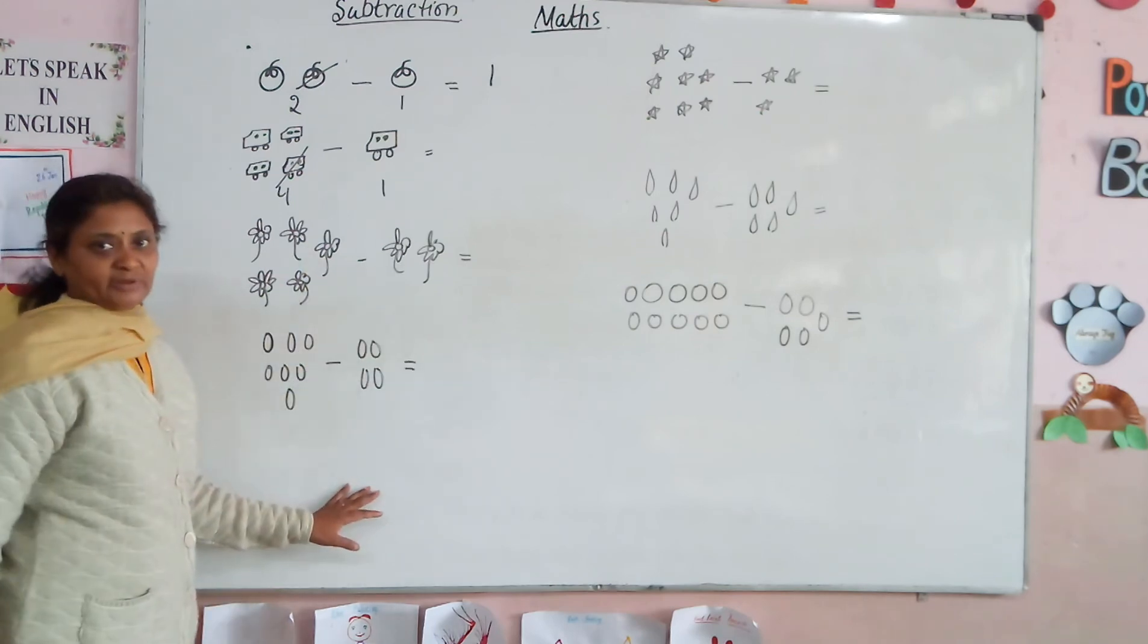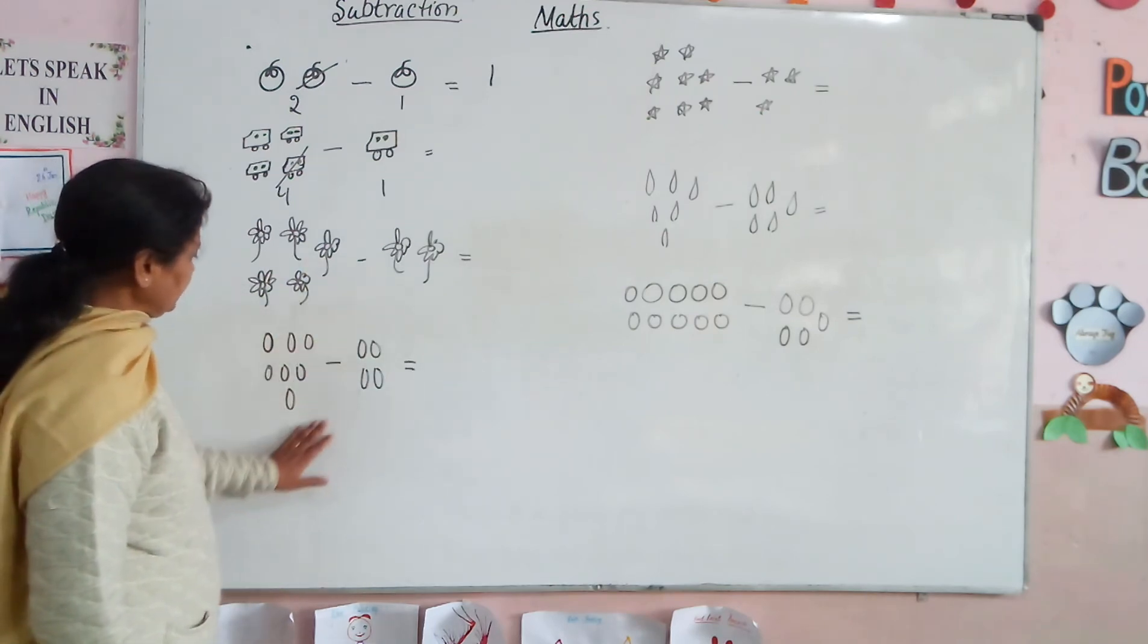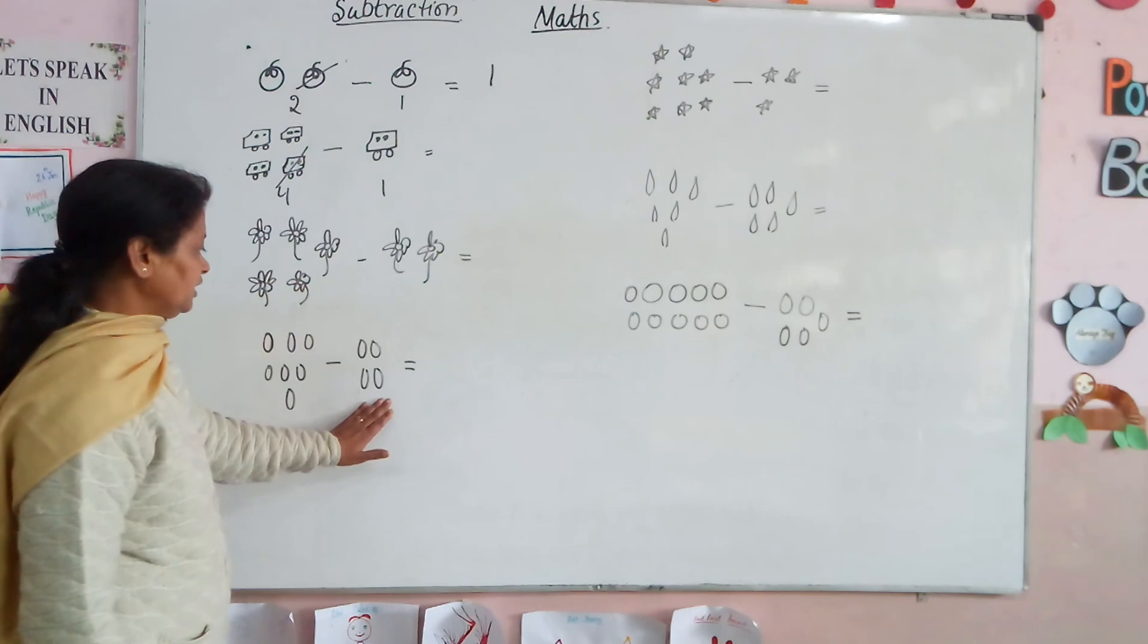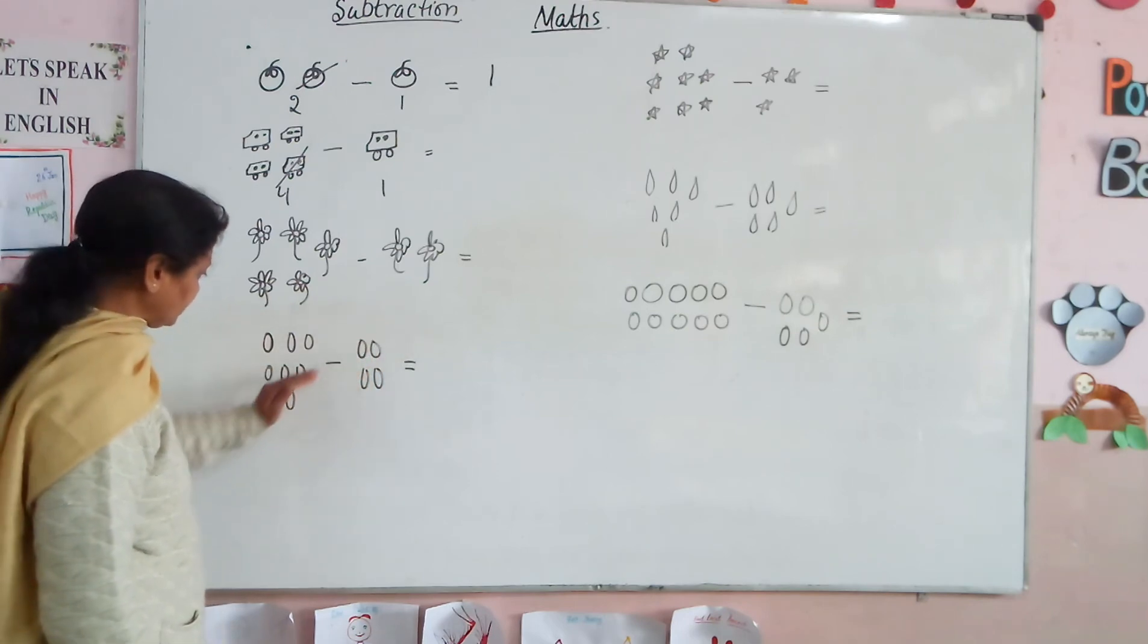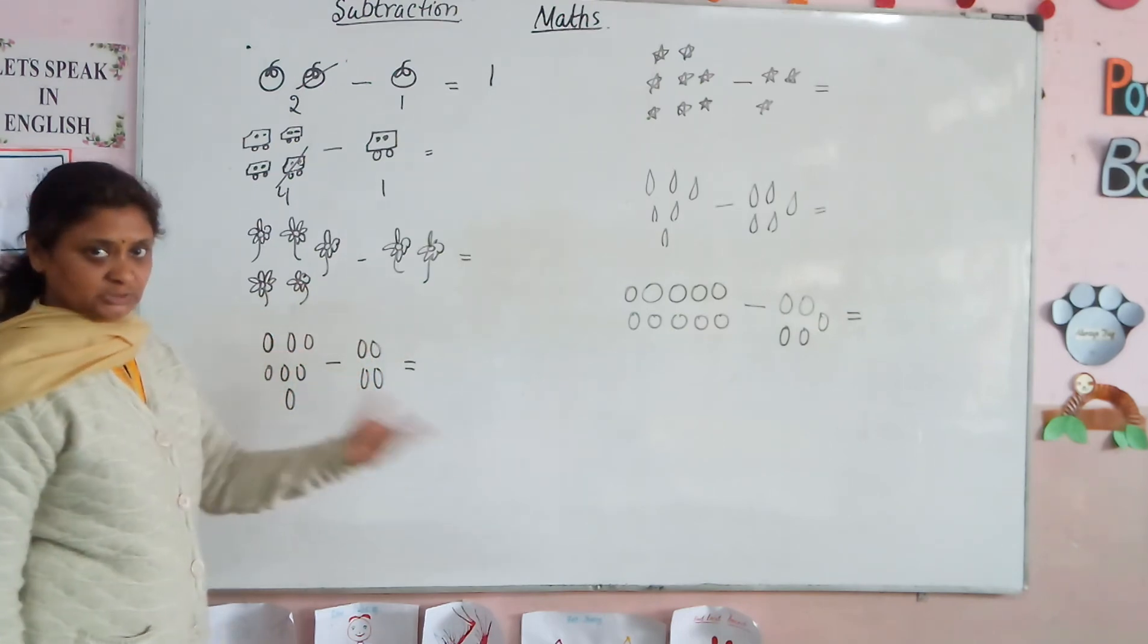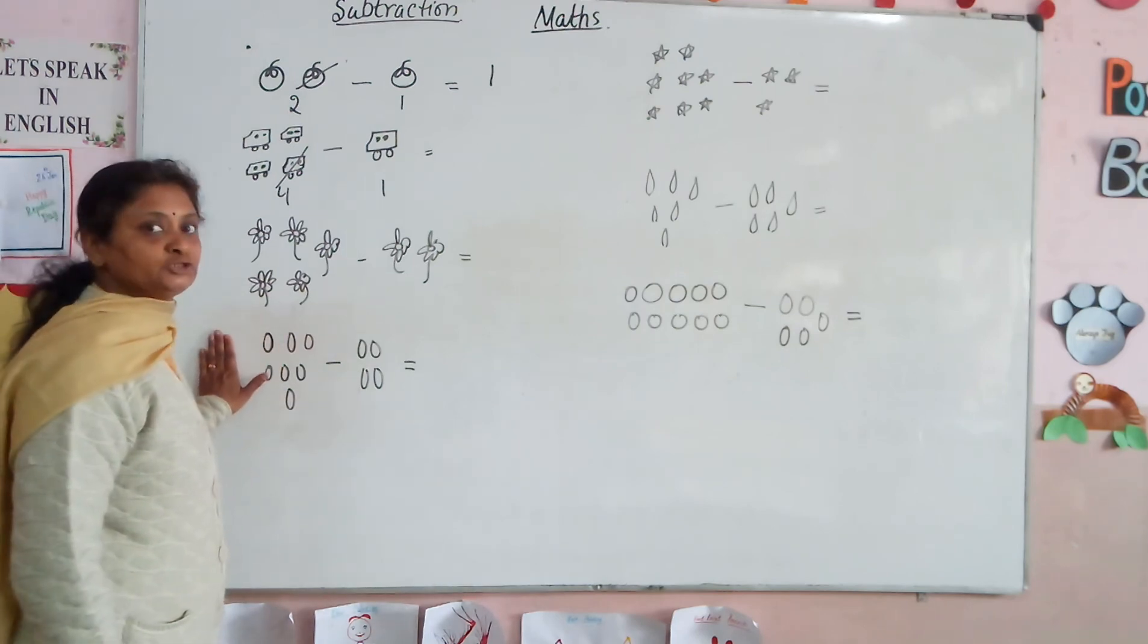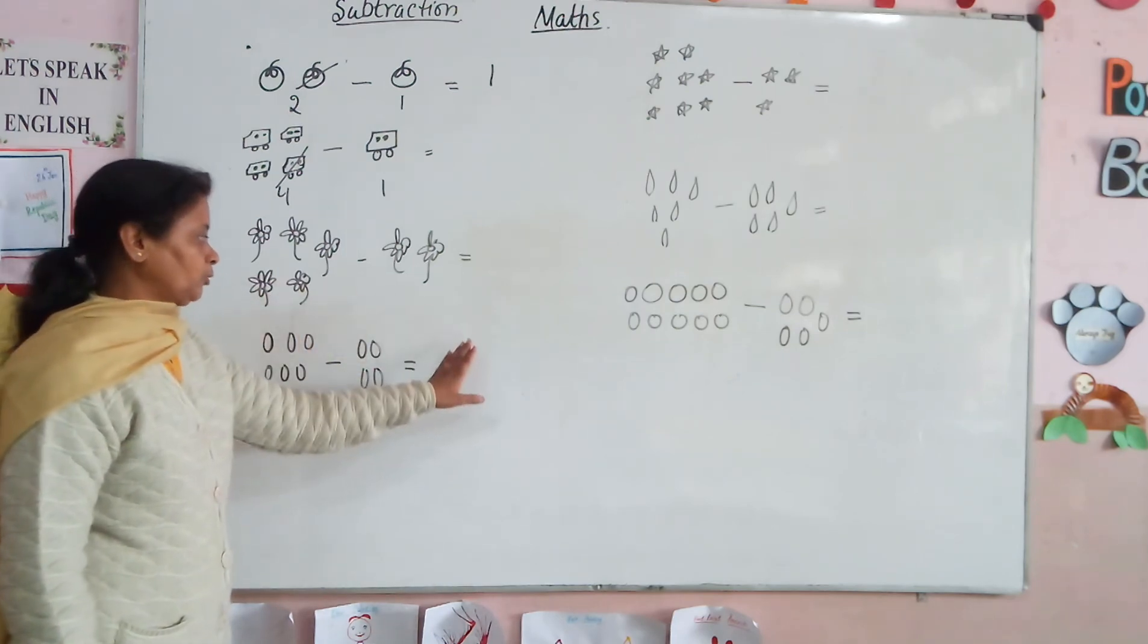So this is how we have to do the subtraction of the pictures. We have to count the number, count how many to take away, and then count how many are left. That gives us the answer.